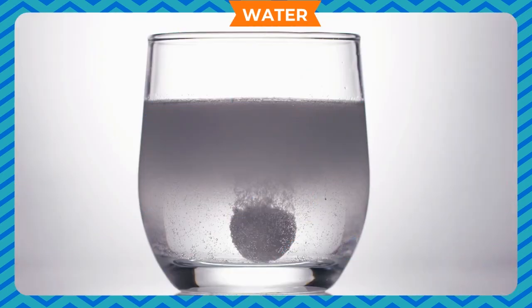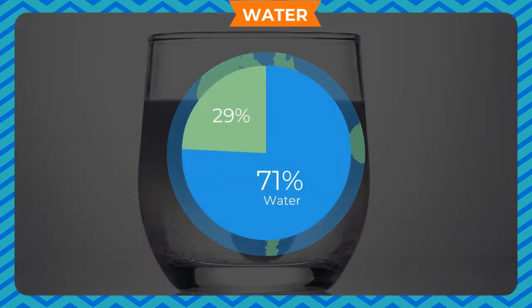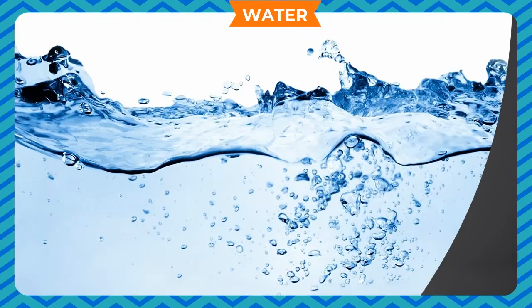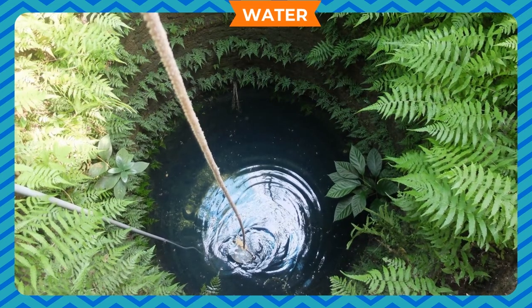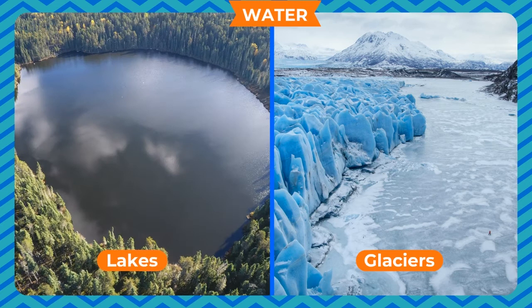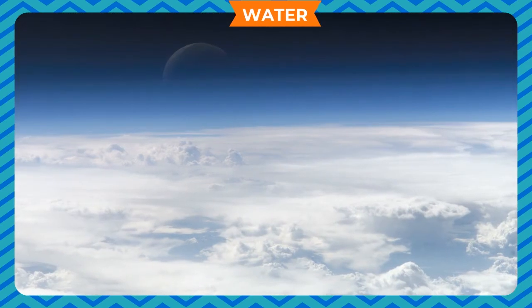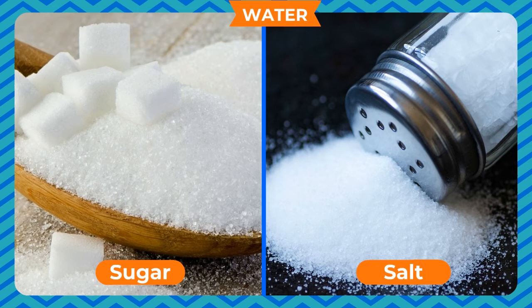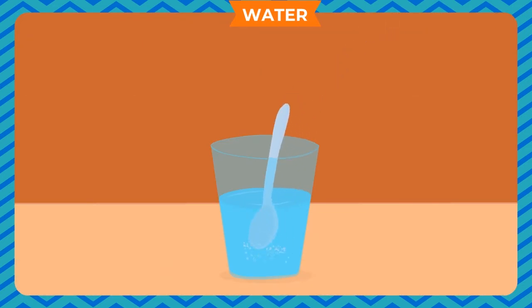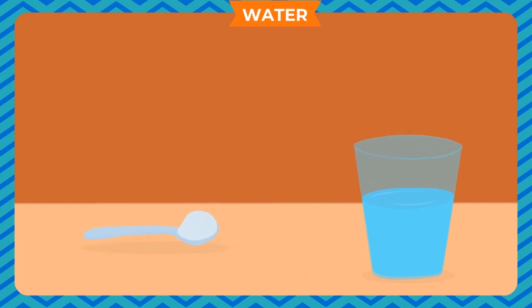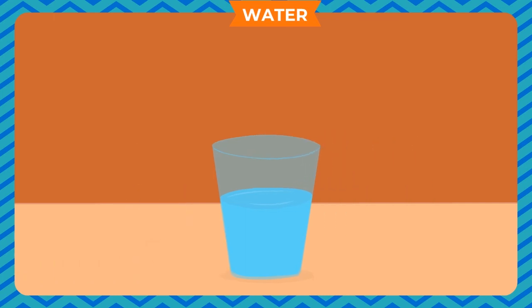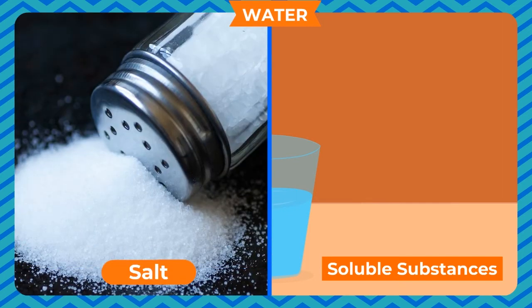Water is known as the universal solvent. The solubility of a substance is defined as per its solubility in water. Nearly 71% of our earth is covered with water, available in various forms such as groundwater, underground water, seawater, glaciers, lakes, and water vapor. Water dissolves substances like sugar and salt — the substance that dissolves is called the solute, and the water in which it dissolves is called the solvent. Substances which dissolve in water are called soluble substances, for example salt and sugar.